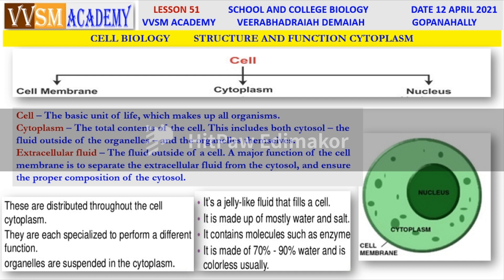After the cell membrane comes cytoplasm, and some of the important components of the cytoplasm. These are distributed throughout the cell cytoplasm. They are each specialized to perform a different function. Organelles are suspended — floating — in the jelly-like fluid of the cell, that is cytoplasm. It contains molecules such as enzymes. It is made up of 70% to 90% water, and is colorless — a jelly-like material.